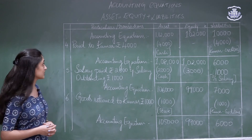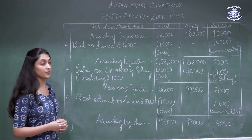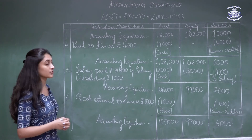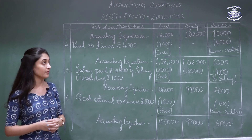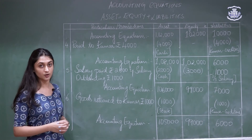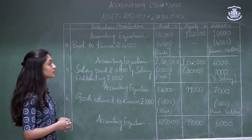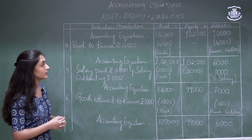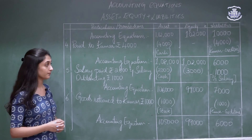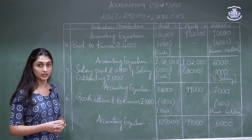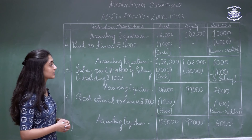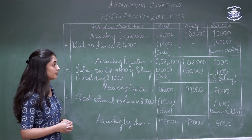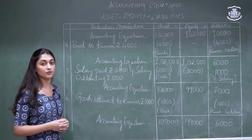The fourth transaction: paid to Kumar rupees 4,000. There are two aspects: the cash balance reduces by 4,000, so we deduct 4,000 from the asset column; and Kumar's creditors account reduces by 4,000 in the liabilities column. The new accounting equation is: Assets 1,08,000 = Equity 1,02,000 + Liabilities 6,000.